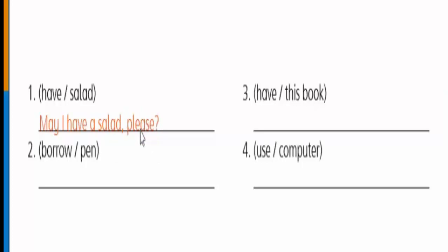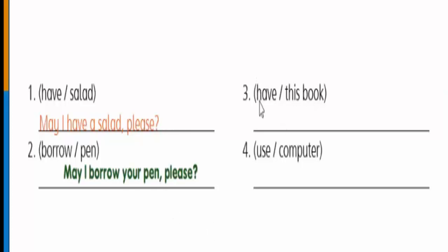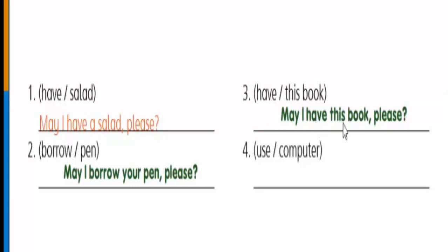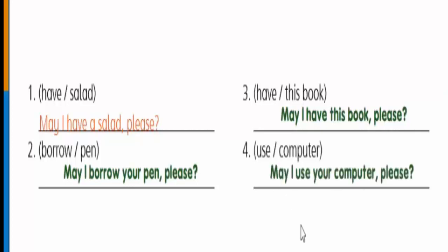Number three: using 'have' and 'this book' — 'May I have this book please?' Number four: using 'use' and 'computer' — 'May I use your computer please?'